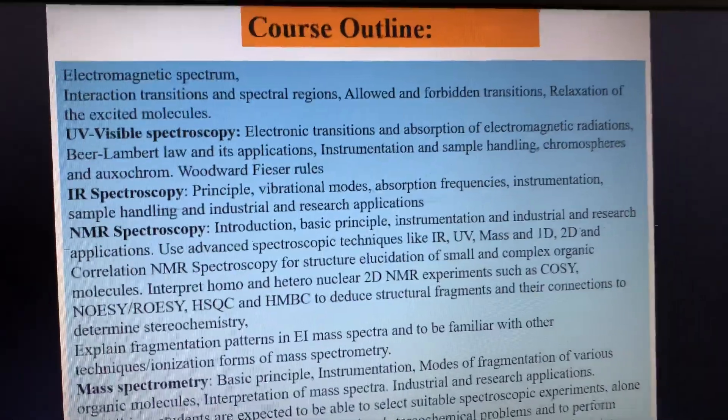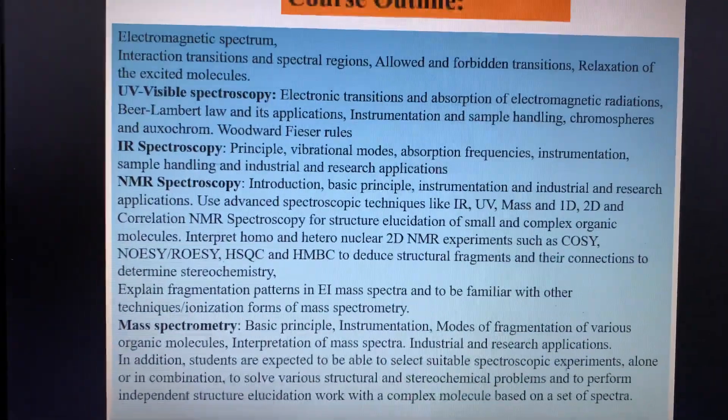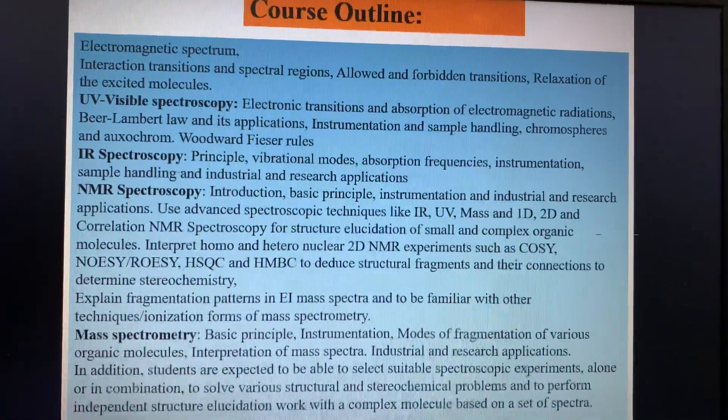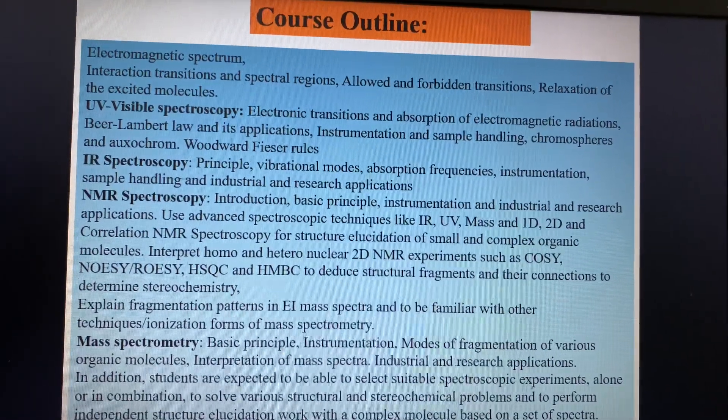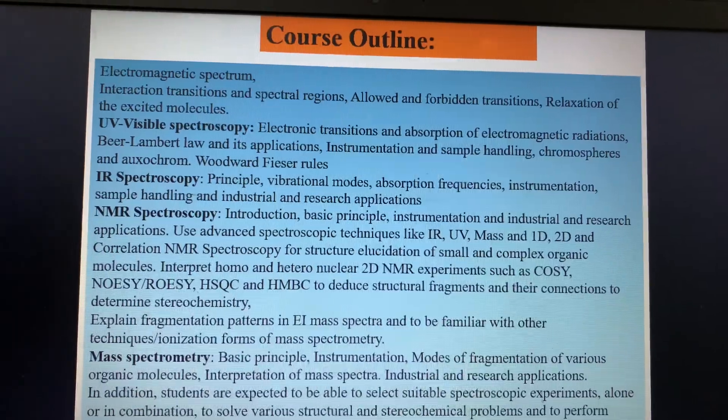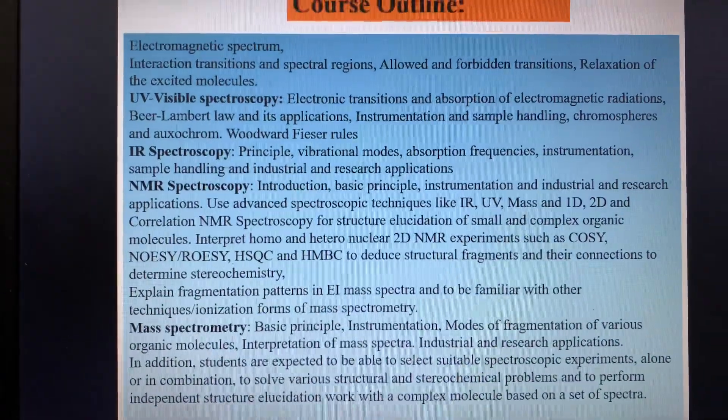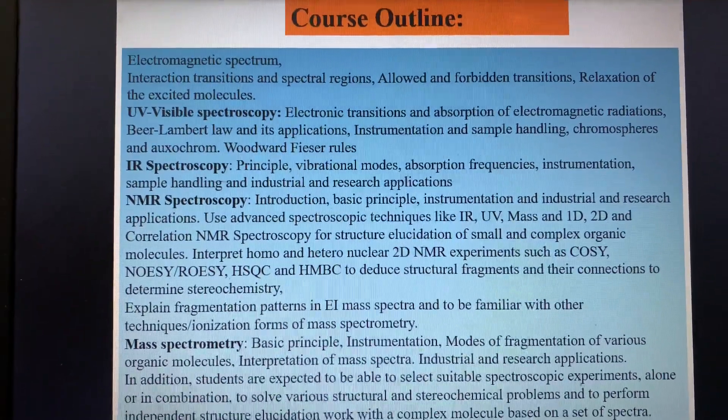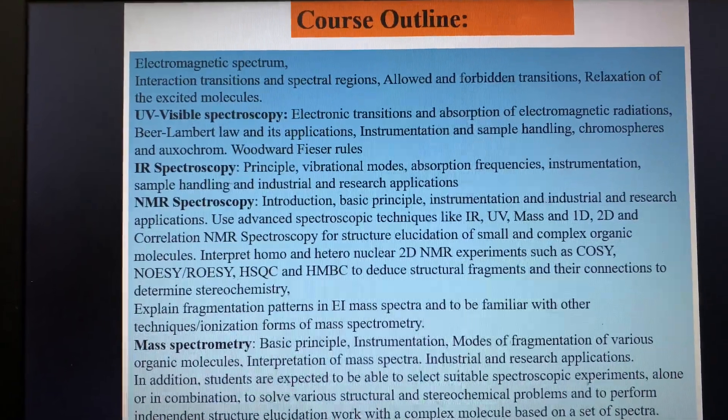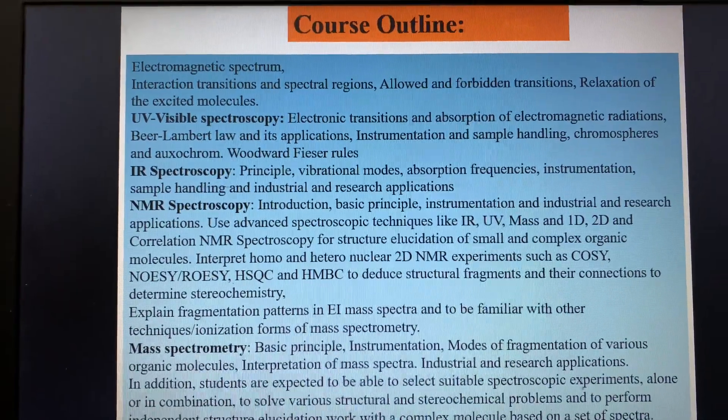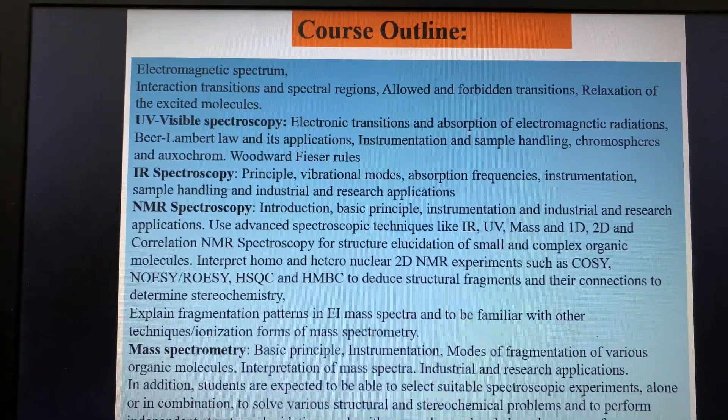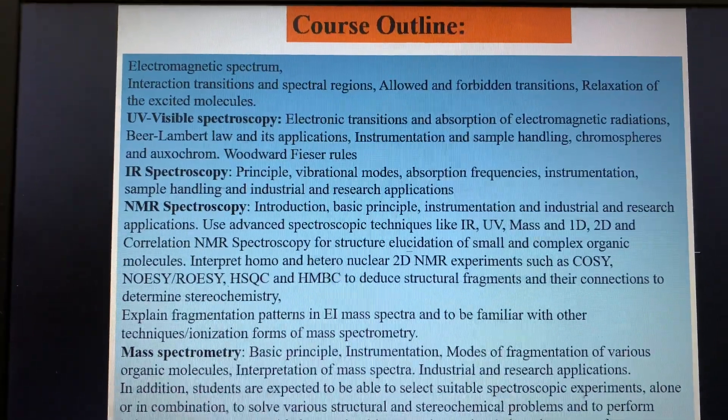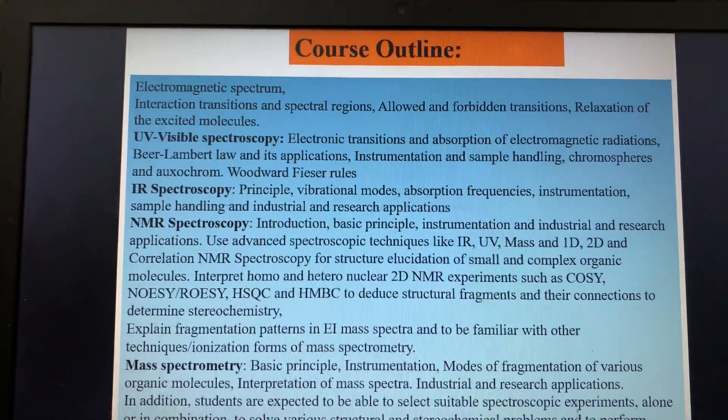This is the course outline. We will start with the electromagnetic spectrum which is the basis of spectroscopy, and the interaction result with UV-Visible spectroscopy. We'll cover Beer-Lambert's law application, electronic transitions, absorption of electromagnetic radiation, chromophores, Woodward-Fieser rules, and other branches of spectroscopy using the electromagnetic spectrum.